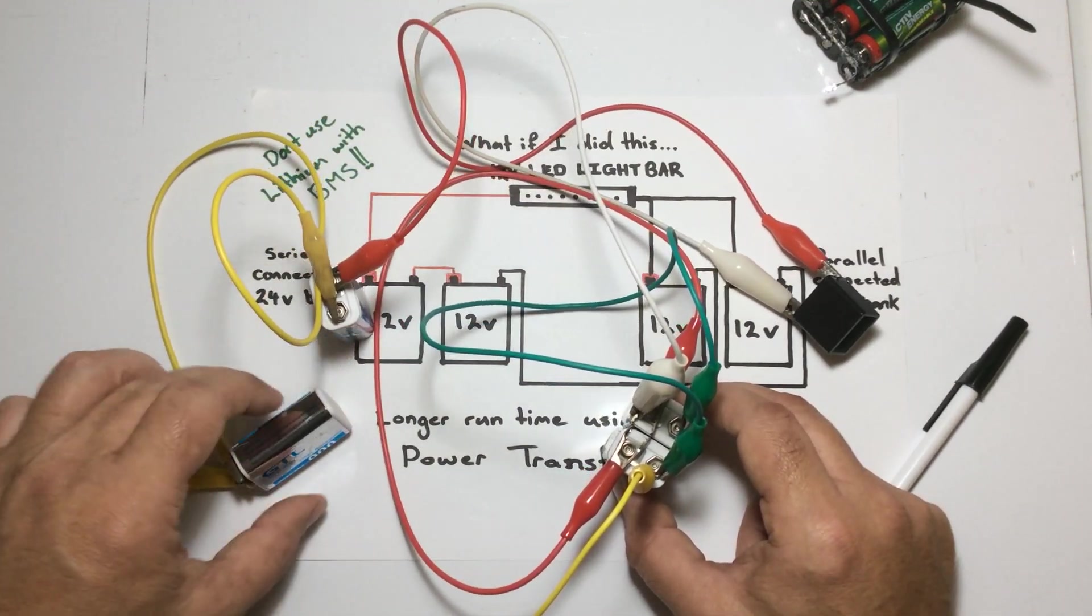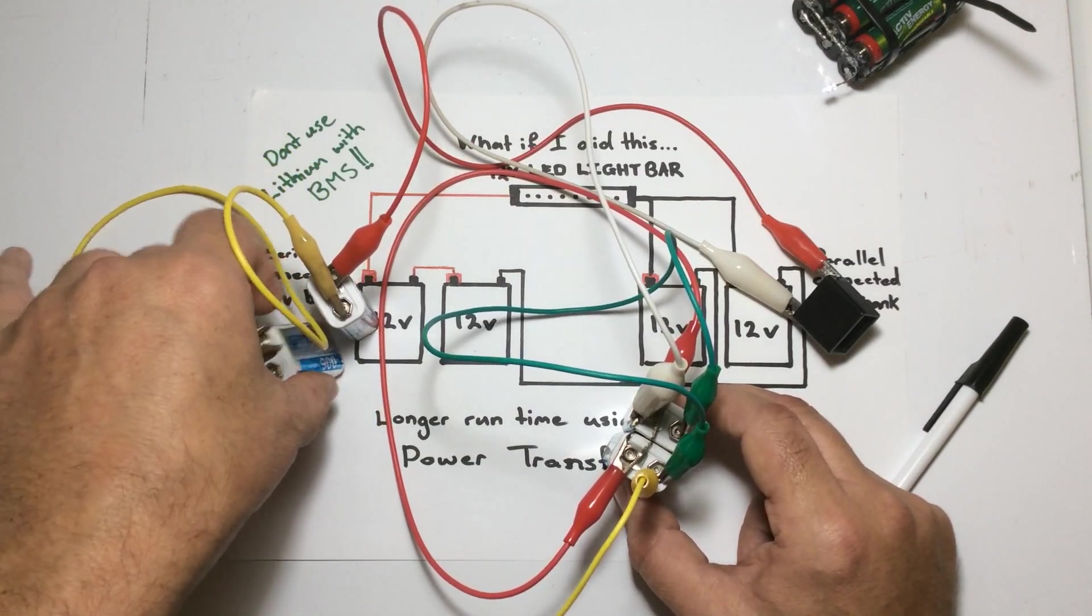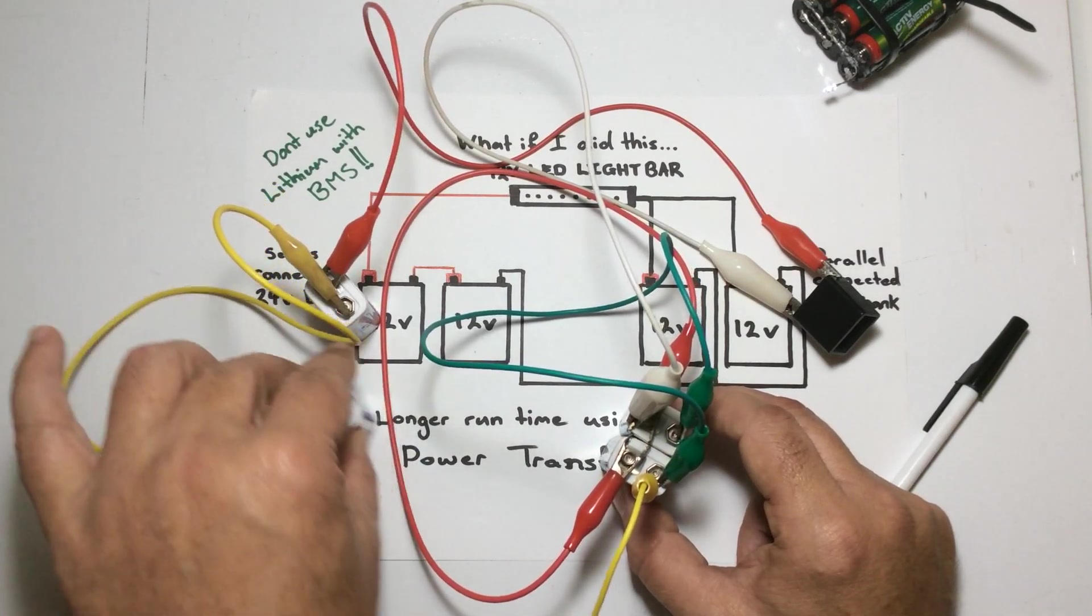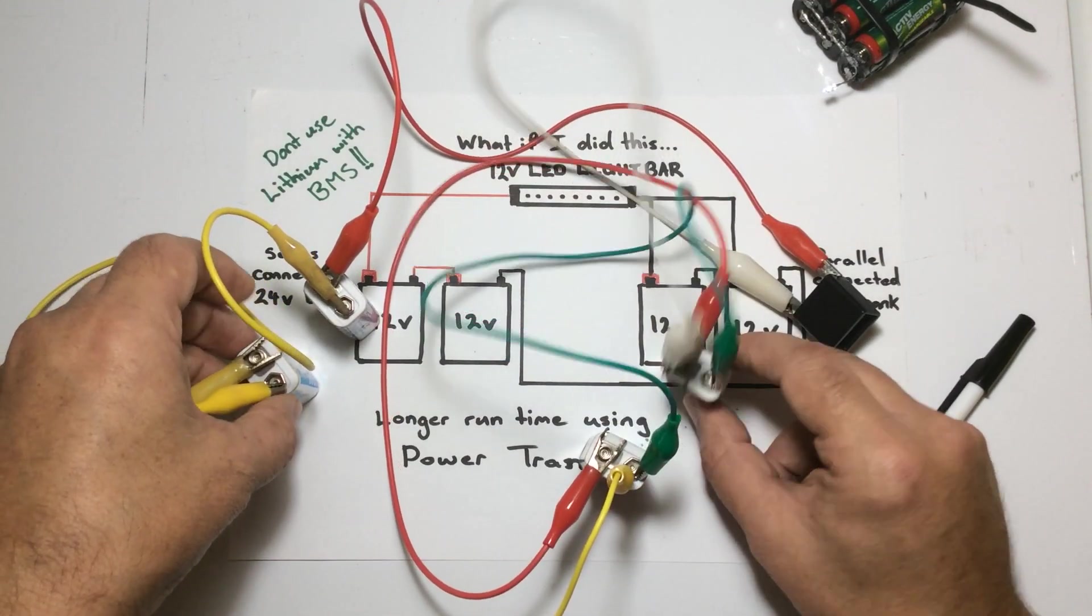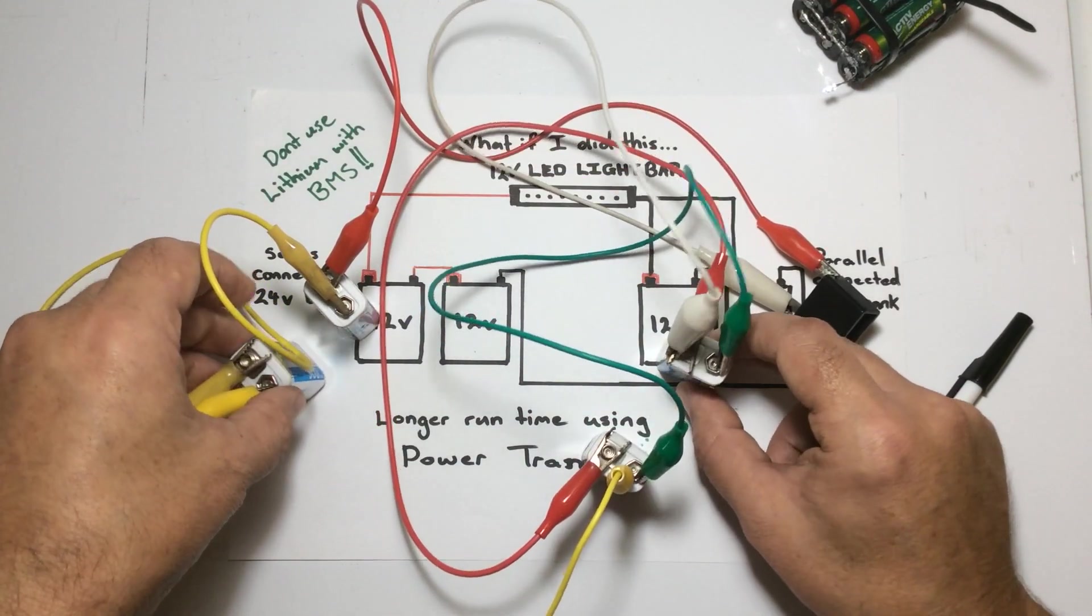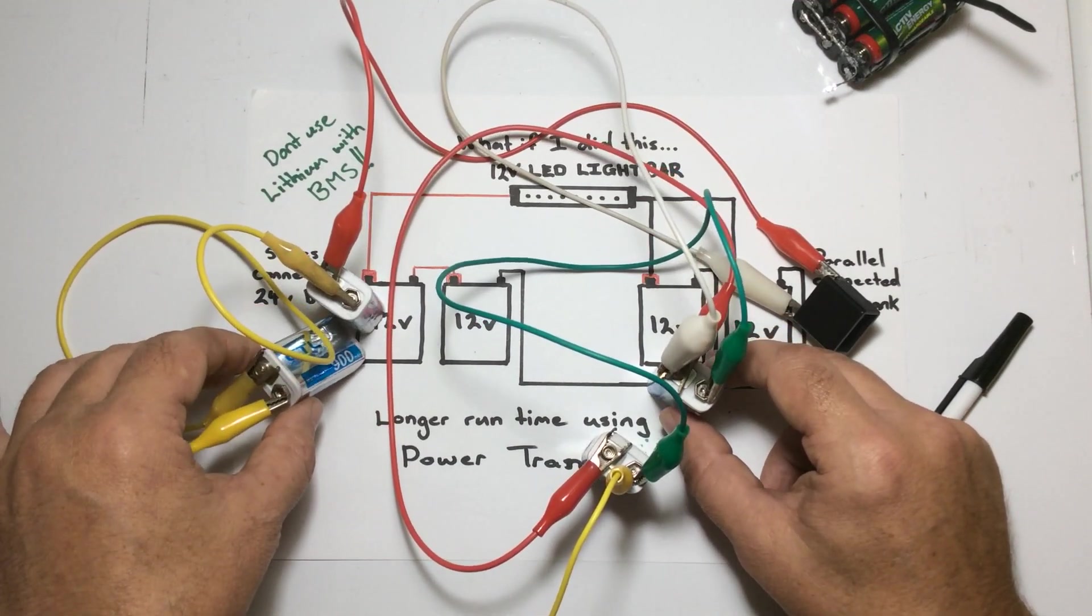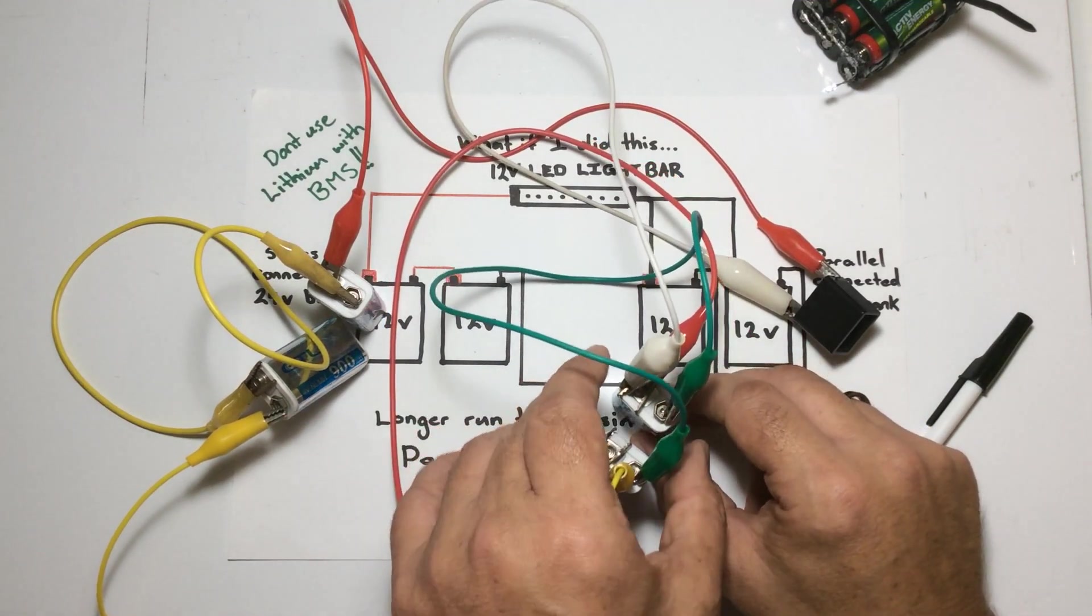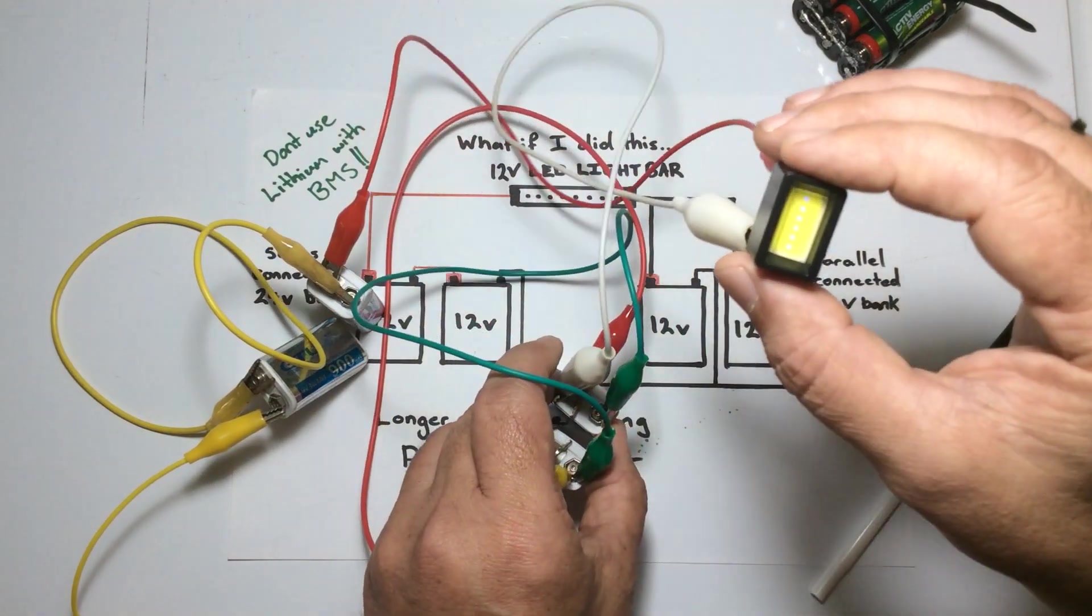These two batteries here at the bottom of the screen are in parallel. These two batteries on the left of the screen are in series with each other, crudely connected up with jumper leads. I've got to get some proper 9-volt clips to attach to these so they can be a bit neater.